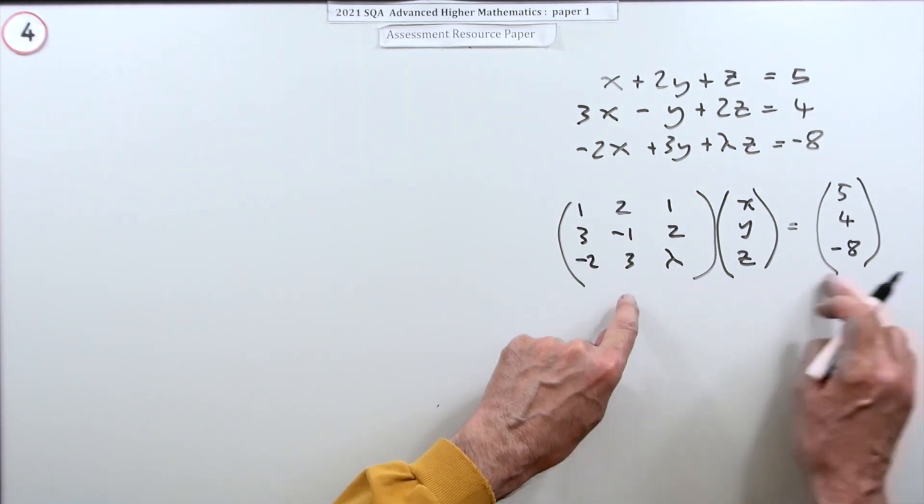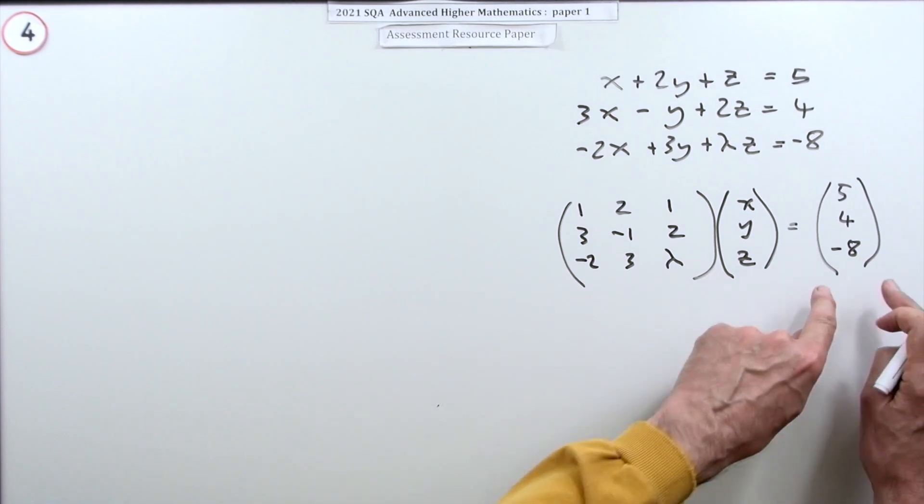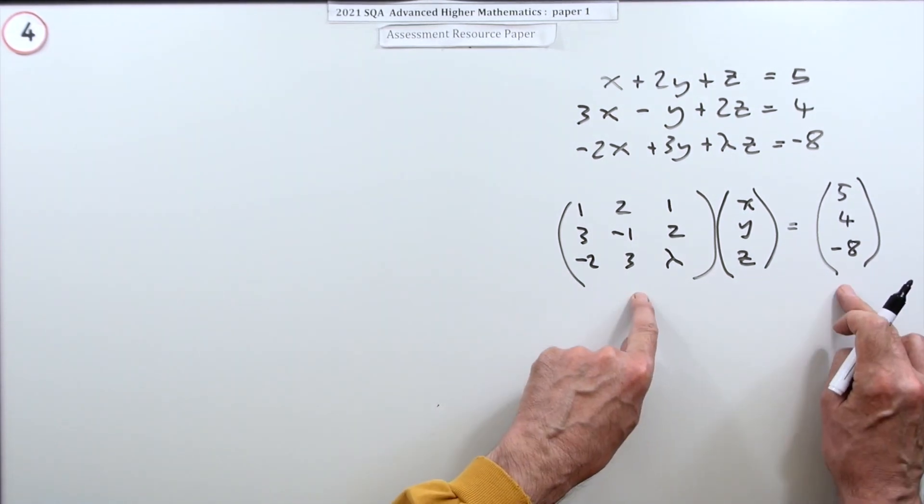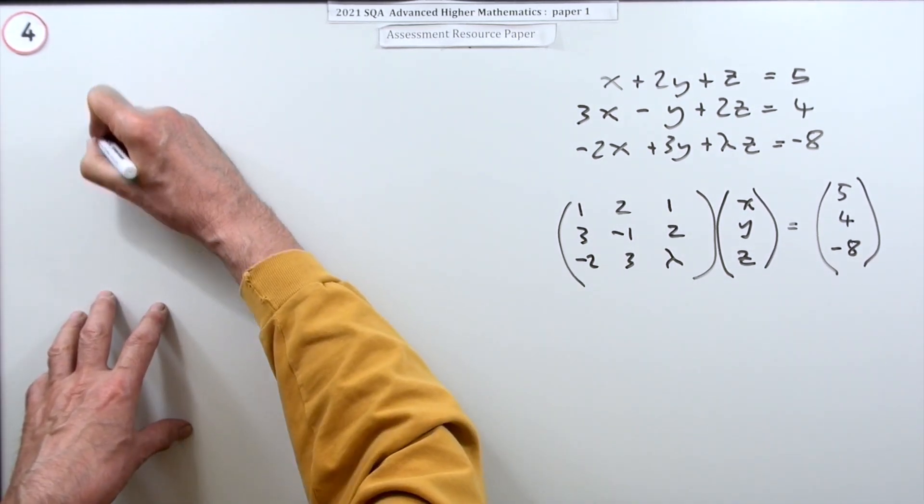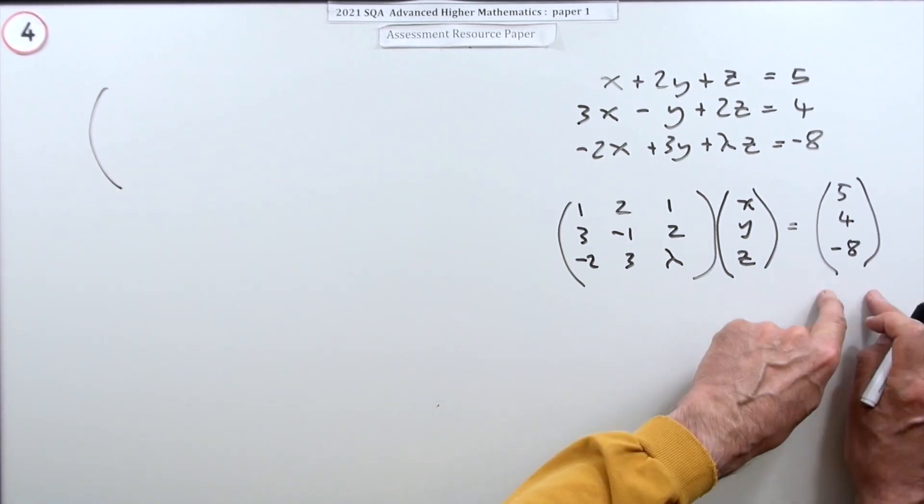So if you were carrying out those elementary row operations in this pair, since you're doing the same thing to this as you're doing to that, you can do them to them both at the same time. And that's why the first thing you do is you form an augmented matrix by joining this matrix onto that matrix.